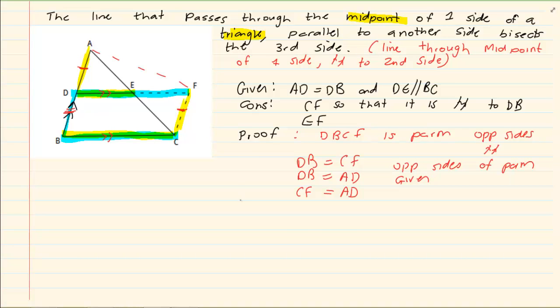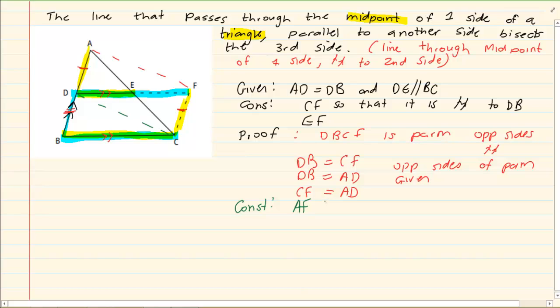Now let us construct another line. This line we are going to construct is AF and DC. Now if you construct that line, we already know that the lines are parallel to each other because we had constructed it such. Now we know that they are equal.